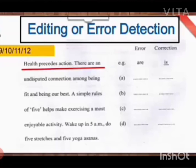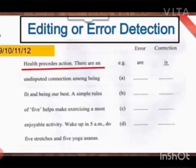A simple rules — when it is 'a simple,' it is singular here. So 'rules' is wrong over here; 'rules' will be replaced by 'rule.' Of five helps make exercising a most — when 'most' comes, you already know that it is a superlative degree. So we will never use 'a' over here; we will use 'the.' Enjoyable activity. Wake up in five a.m. — we never say for time 'in' as a preposition. We never say 'in five a.m.' We say 'at five a.m.'